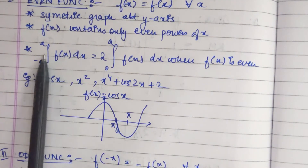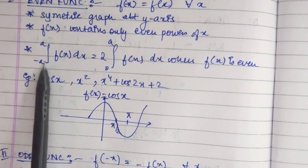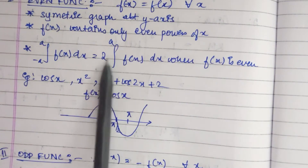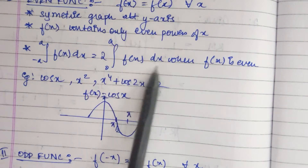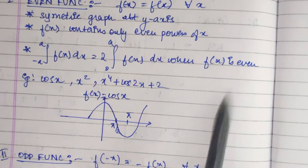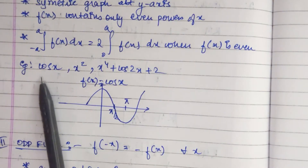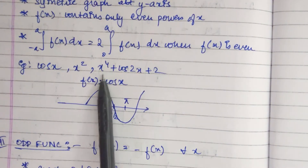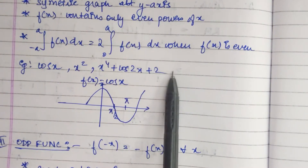We know the formula: the definite integral from minus a to a of f of x dx equals 2 times the integral from 0 to a of f dx, when f of x is even. Some examples of even functions are cos x, x squared, and x to the power 4 plus cos 2x plus 2.